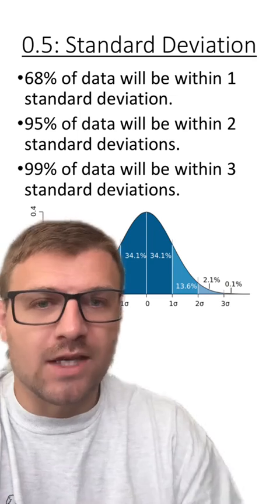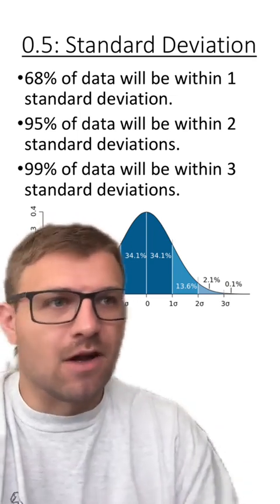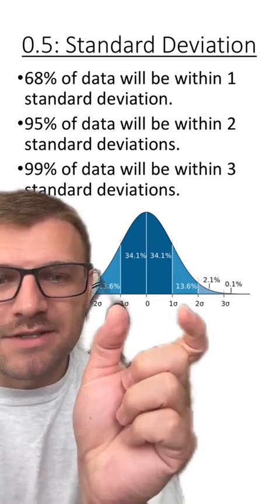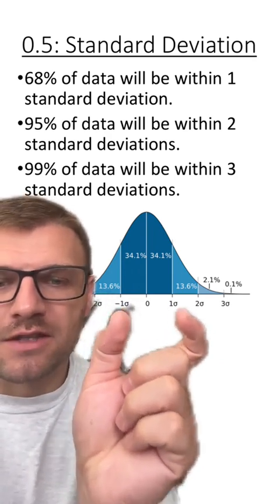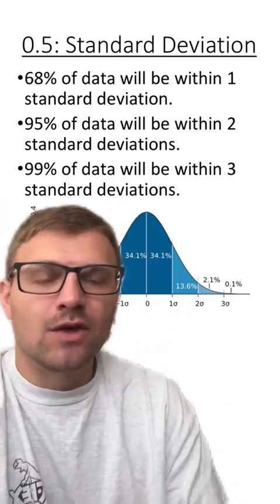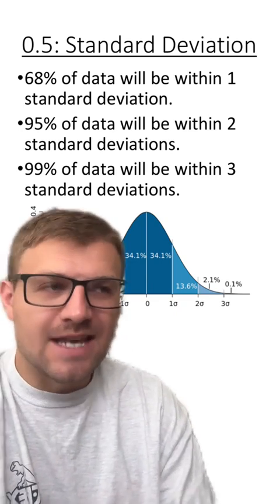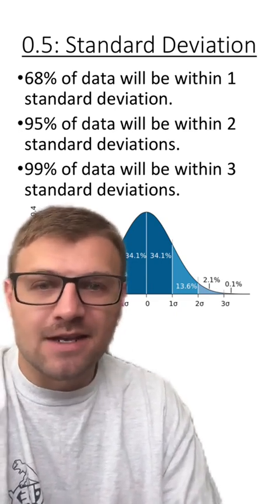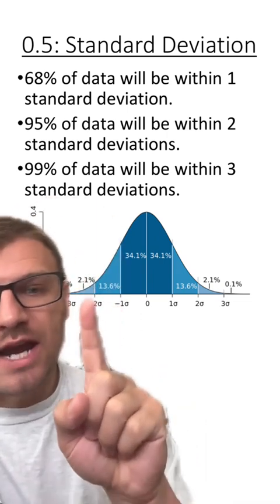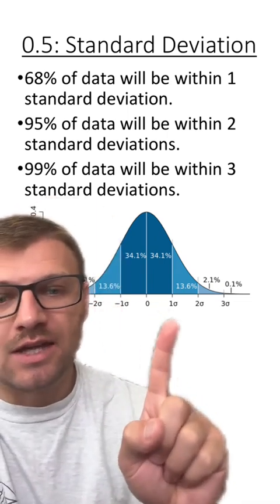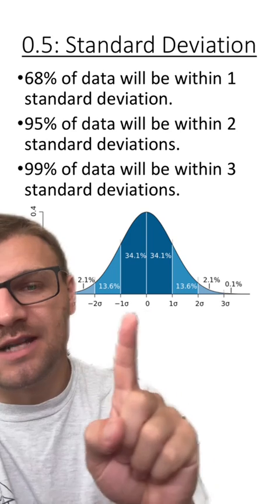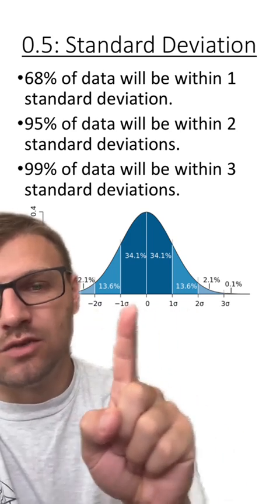That means if we take a data set from some variable, 68% of the data should fall between these two standard deviations. For that same data set, if we look at two standard deviations, 95% of the data should fall between those two points. So if we subtract one standard deviation and we add one standard deviation, 95% of the data should fall between these two points.